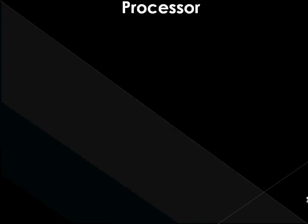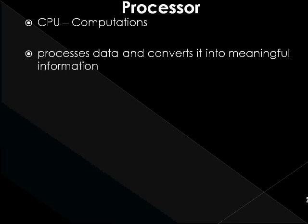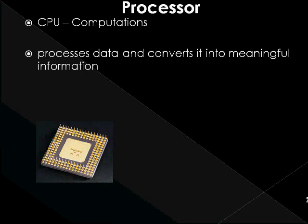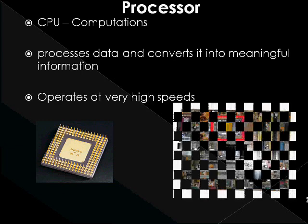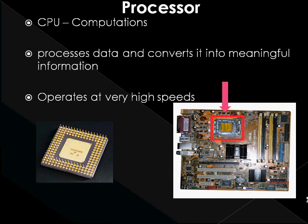Processor. The processor, also known as the central processing unit, CPU, is the brain of the computer. The processor is the part of the computer that actually does the computations. It processes data and converts it into meaningful information. It is the most important component of the computer. It is jam-packed with electronic components called transistors, and it operates at very high speeds. The speed of the processor will normally determine how fast data is processed by the computer — like a 3 GHz processor means that 3 billion operations are being performed per second. This is sometimes referred to as the clock speed of the computer. However, it is important to note that speed is not everything when evaluating the performance of a computer.